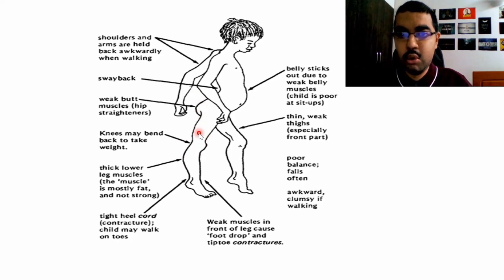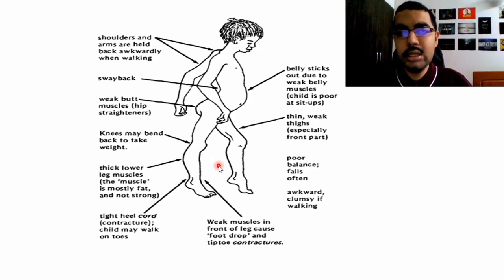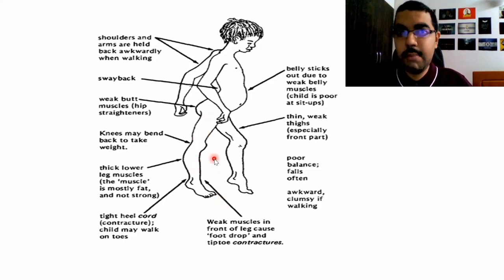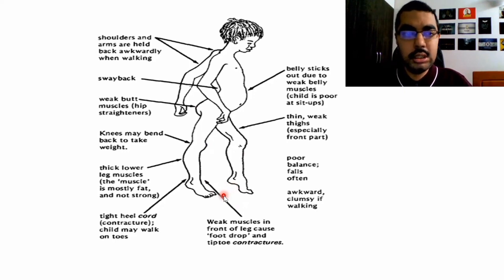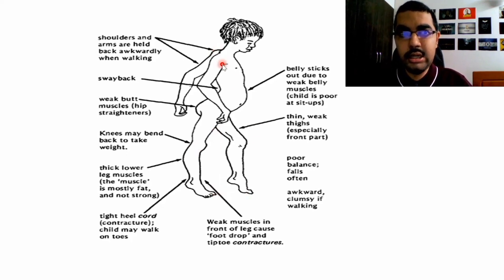There is something called anti-gravity muscles — the muscles that act against gravity, like pulling up and getting up. These start getting weak initially, but eventually everything starts to atrophy or shrink. Once it affects the leg, it starts affecting the hands, so the shoulders and arms are typically held in a retracted position.